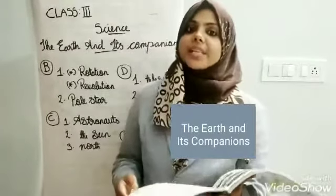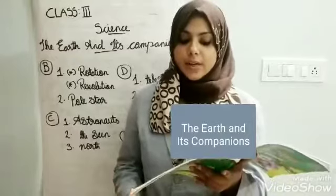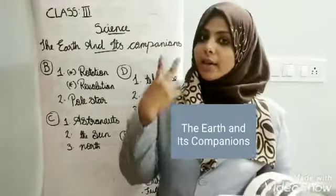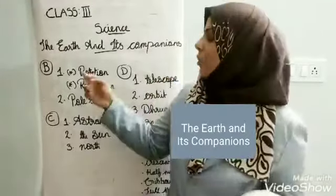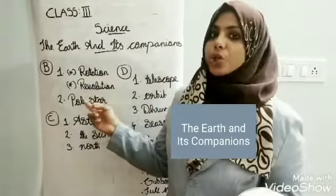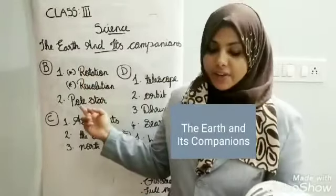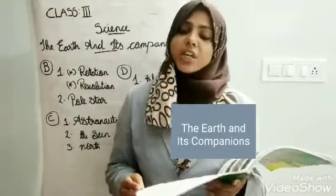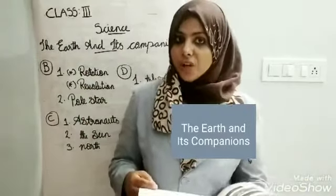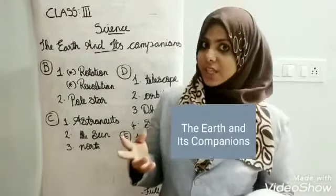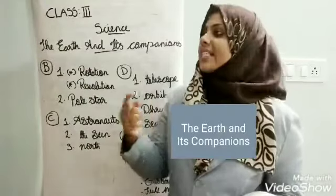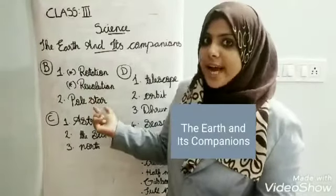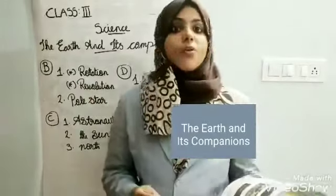Section B: science quiz. First question: name two movements of the Earth. We know the Earth has two types of movements — rotation and revolution. Second question: name the stationary star in the sky. The stationary star is definitely the pole star, also called Dhrutara.